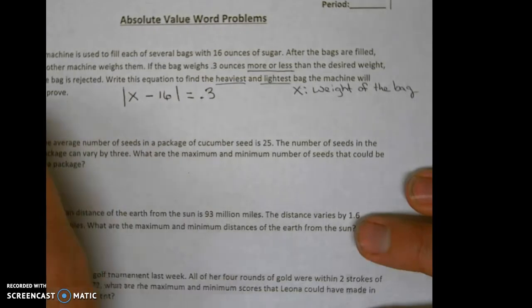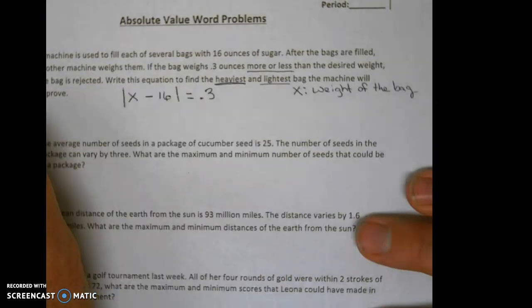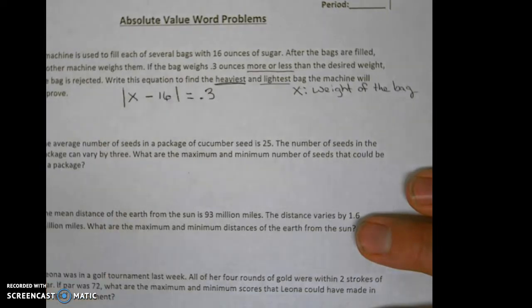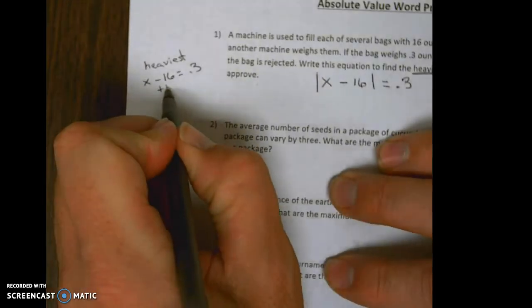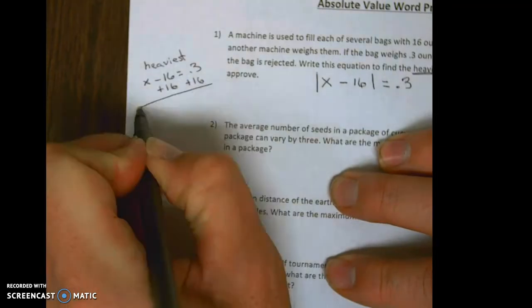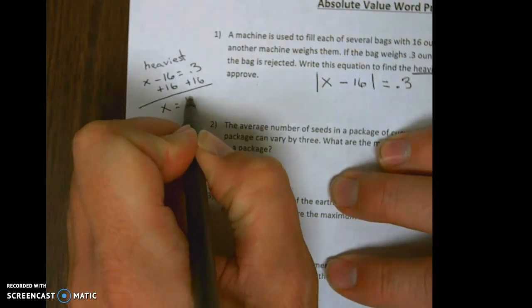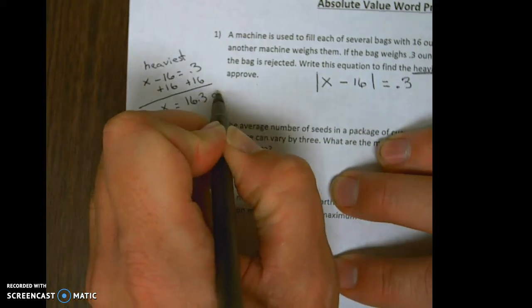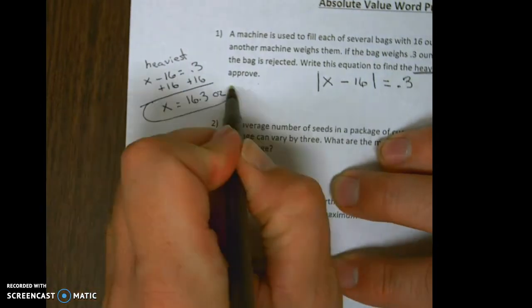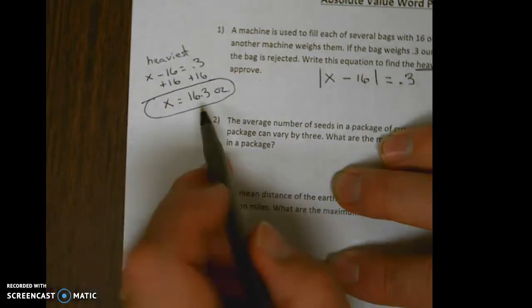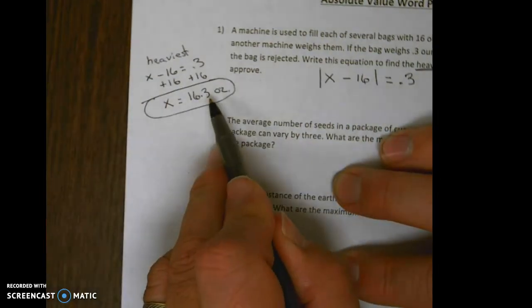So solving this, let's go ahead and do the heaviest. That would just be basically x minus 16 equals 0.3. I'll do that over here on the side. Adding 16 on both sides, so the weight of the bag can be 16.3 ounces. That's the heaviest the bag can be. Notice you have the sugar and then you have your margin of error, 0.3. You can be above by 0.3.